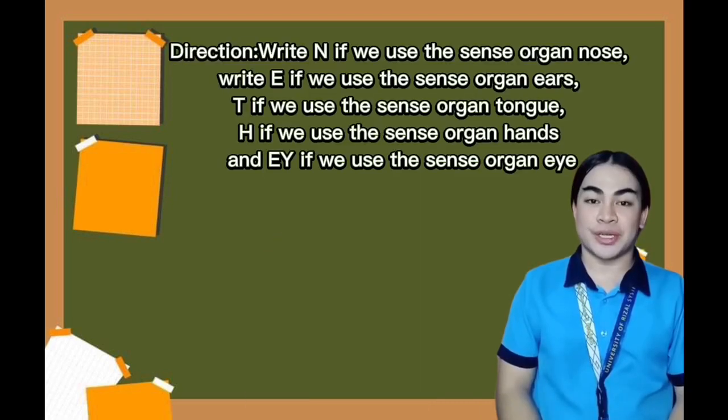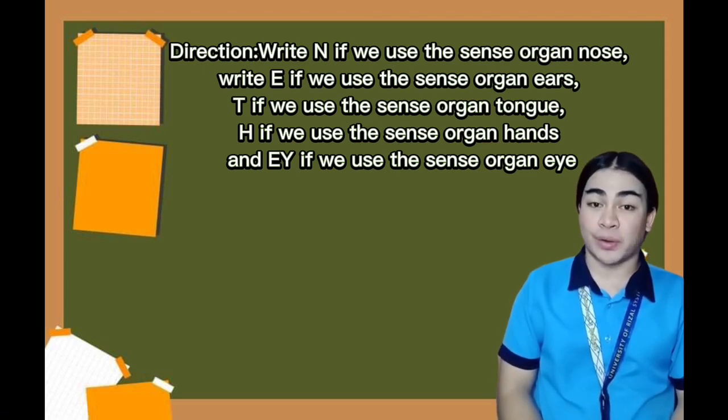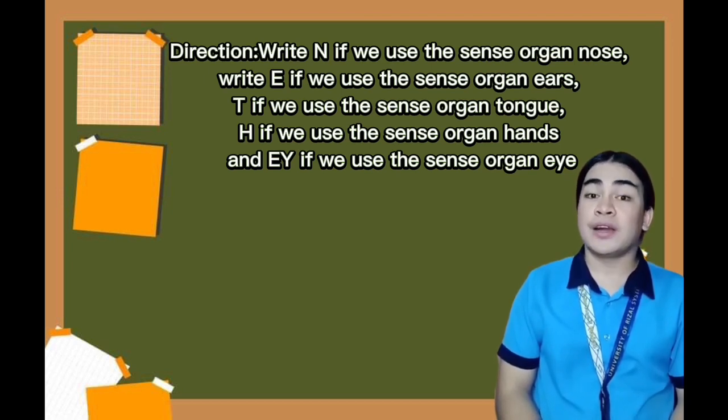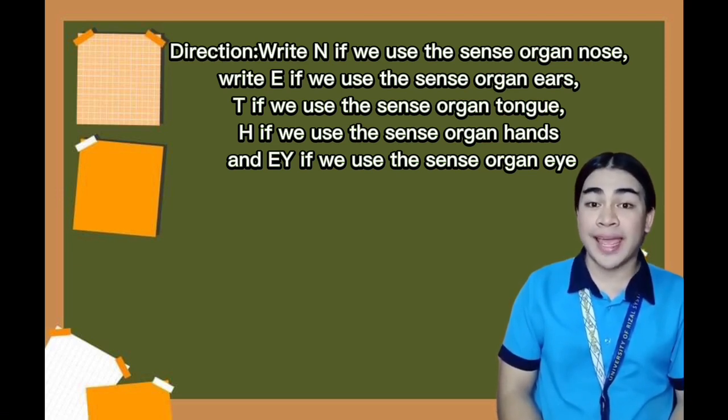Since you understand the lesson, it's time for your activity. Get a pencil and paper. Write N if we use the nose, E for ears, T for tongue, H for hands, and EY for eyes. Number your paper one to five. You have only five minutes to answer this activity.